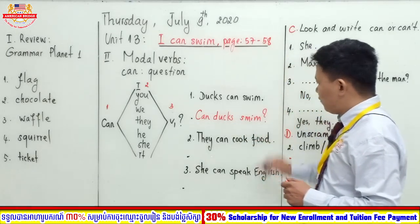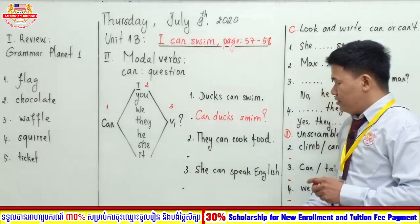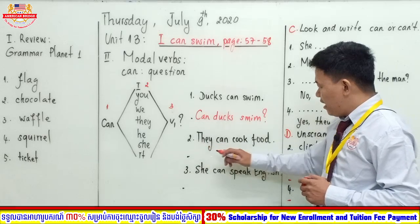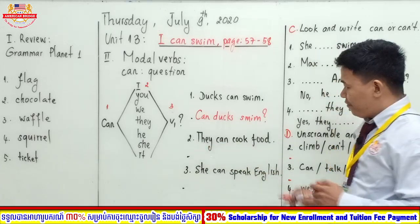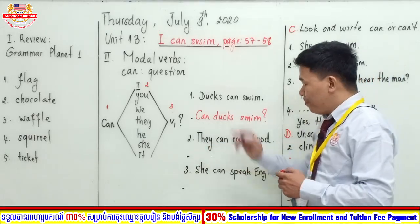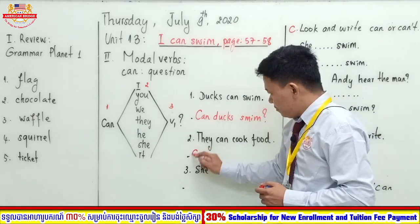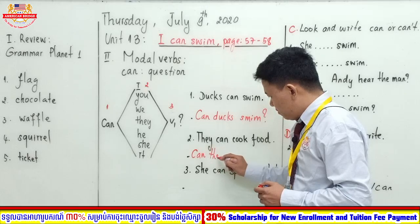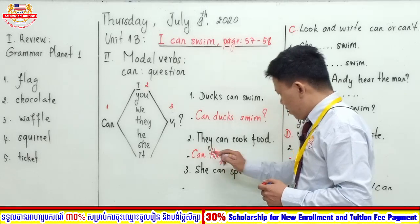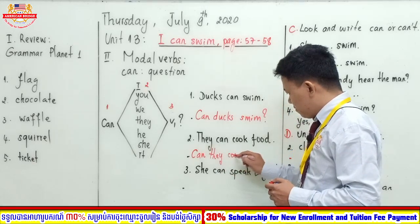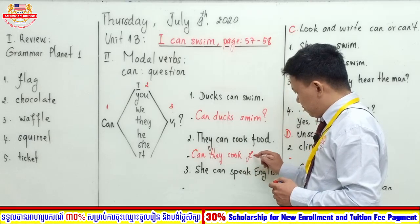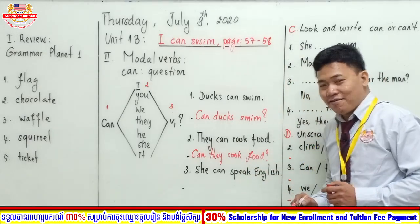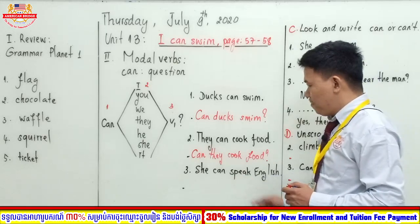Can ducks swim — do not forget the question mark. We are done with number one. Now number two: 'They can cook food.' We follow the same form. Can... can they... cook food — question mark. Easy, right? How about the last one: 'She can speak English.'